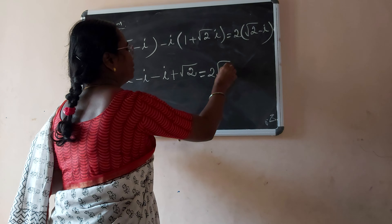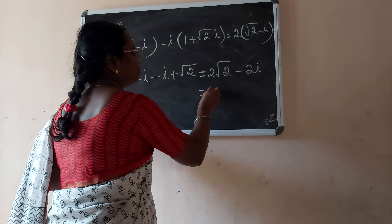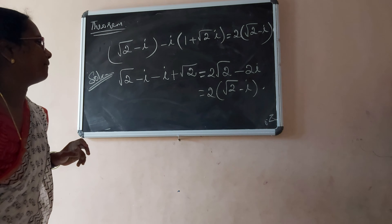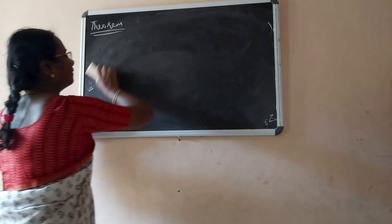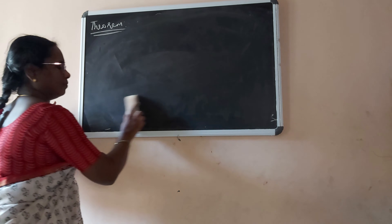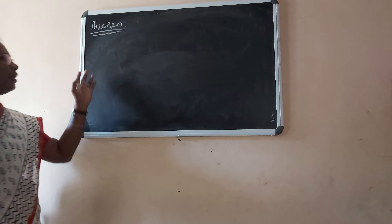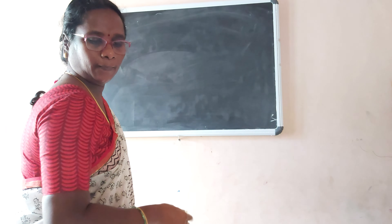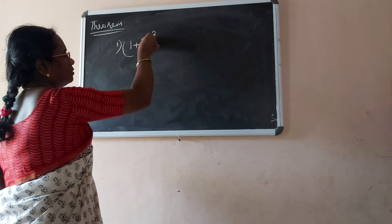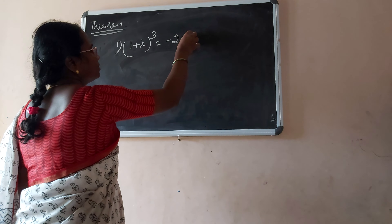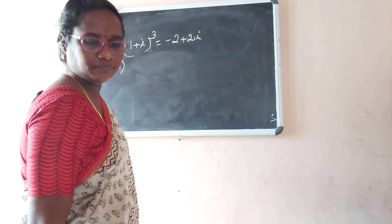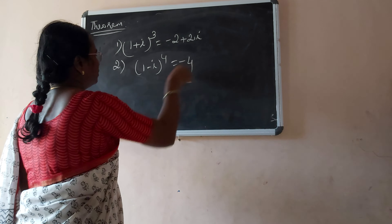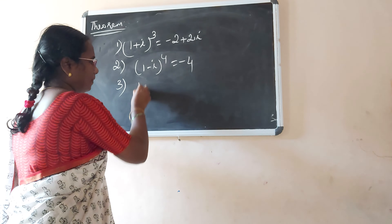Let us do some problems. Verify that (√2 minus i)(minus i)(1 plus √2·i) is equal to 2(√2 minus i). Solution: expanding (√2 minus i)(minus i) gives minus √2·i plus i squared, and since i squared equals minus 1, we get plus √2, giving us 2√2 minus 2i, which equals 2(√2 minus i).